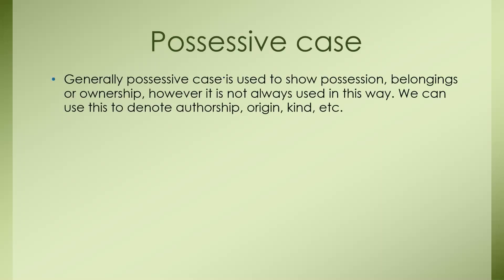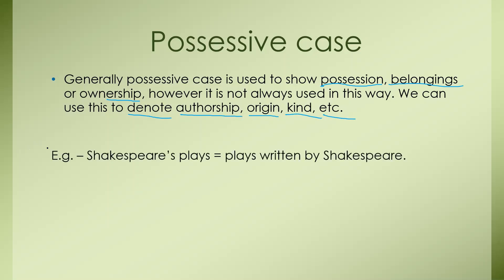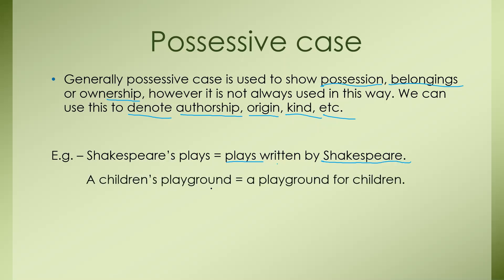Possessive Case. Generally, the possessive case is used to show possession, belongings, or ownership. However, it is not always used in this way. We can use it to denote authorship, origin, kind, etc. Example: 'Shakespeare's play' — this means the play is written by Shakespeare. 'A children's playground' — this means a playground for children.